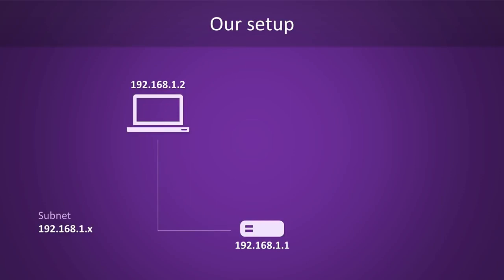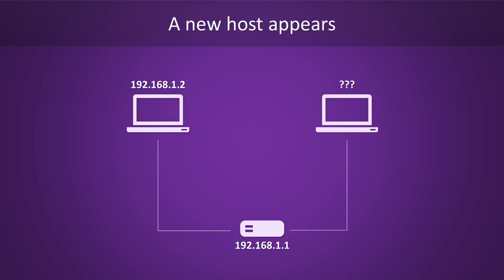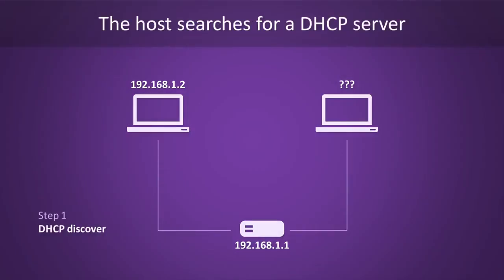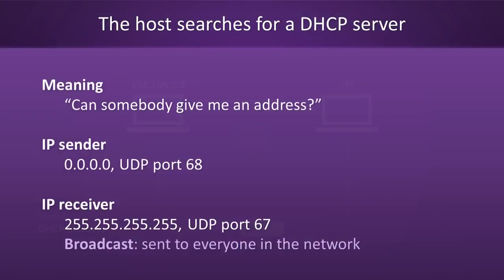Here's our trusty old network again. We have a router set up at .1 and a host set up at .2. Let's consider what happens when a new host appears. Step one of the process is the DHCP discover step. This is where the host searches for any available DHCP servers to get an address from. Since the host does not know where our DHCP server is, it will just send out a discover request to everyone on the network — this is called broadcasting. Since our new host does not yet have an IP address, the sender field of this packet will be set to 0, and the receiver field will be set to 4x255, which will cause the packet to be broadcast over the current network. UDP port 68 is reserved for DHCP clients.